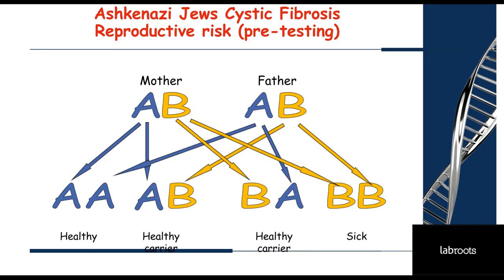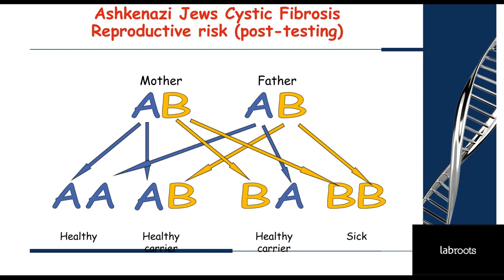Let's revisit the reproductive risk calculation. A priori: 1 in 25 × 1 in 25 × 1/4 = 1 in 2,500 children affected. However, post-testing, if both mother and father are of Ashkenazi Jewish origin and both tested negative, each has a residual risk of 1 in 801. The chance of an affected child is now 1 in 801 × 1 in 801 × 1/4 ≈ 1 in 2.5 million — very low, but not zero.